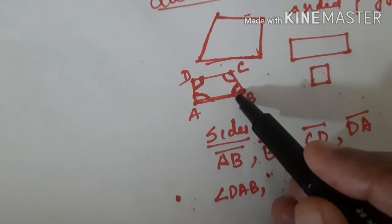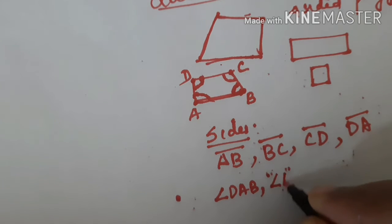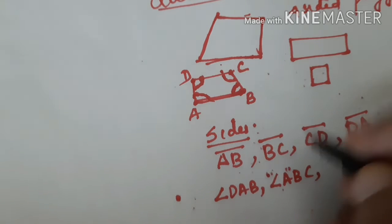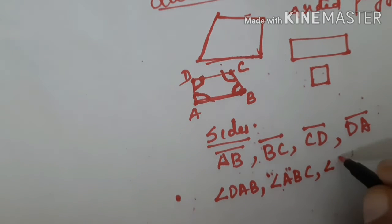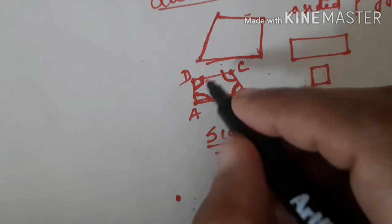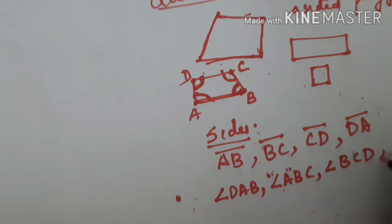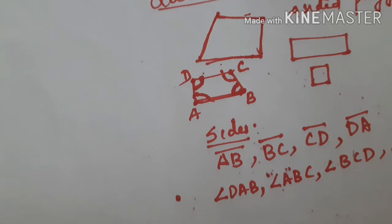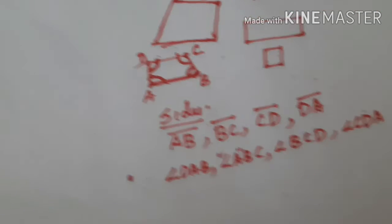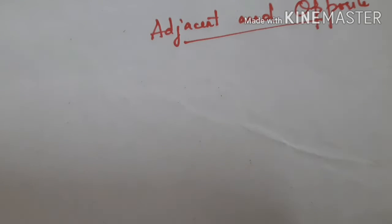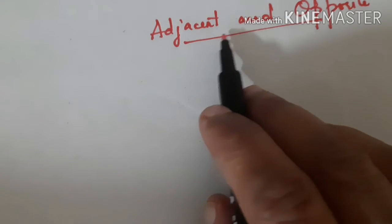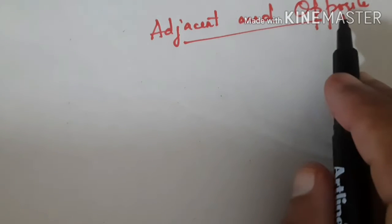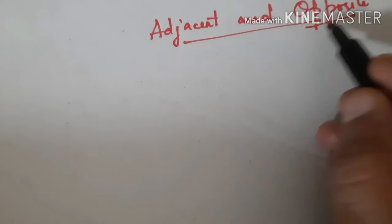The four angles are: angle A, which you can write as angle DAB; angle B as angle ABC; angle C as angle BCD; and angle D as angle CDA. So four sides and four angles are there.